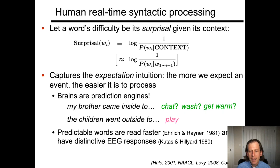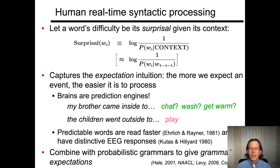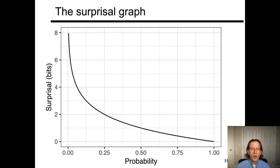We've seen before that predictable words are read faster and have distinctive EEG responses. The next step is to hook up the idea of surprisal with probabilistic grammars to give grammatical expectations. It's the probabilistic early algorithm that provides the underlying machinery for those grammatical expectations, computed on probabilities of a grammar. The surprisal graph shows that a probability-one event carries zero bits of surprisal. As probability decreases towards zero, surprisal increases asymptotically towards infinity. A zero-probability event is infinitely surprising, but fortunately it never happens.